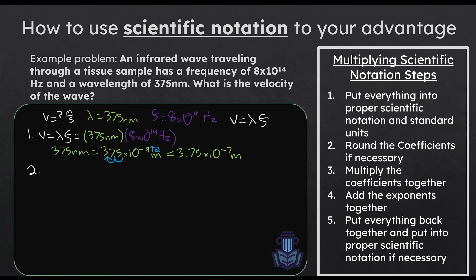From here we can move on to step two. We don't need to round 8 to anything, so we're not going to touch the frequency. But we can round the wavelength coefficient of 3.75 up to 4. So our equation now states that 4 × 10^−7 meters times 8 × 10^14 hertz equals the velocity we're looking for. In step three, all we have to do is take the two coefficients — 4 and 8 — and multiply them together to get 32.